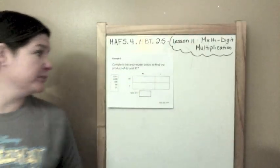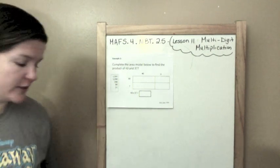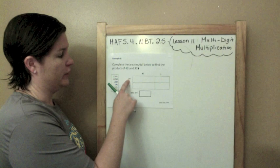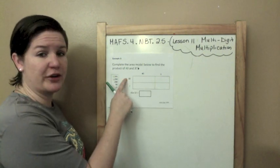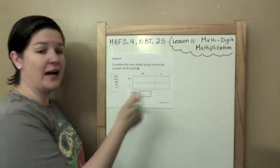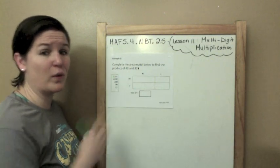Example 3. Complete the area model below to find the product of 43 and 37. So I've got 40 plus 3 is 43. I've got 30 plus 7 is 37. I just have to solve it out. And I even have my partial products over here. I just have to know where I've got to plug them in.